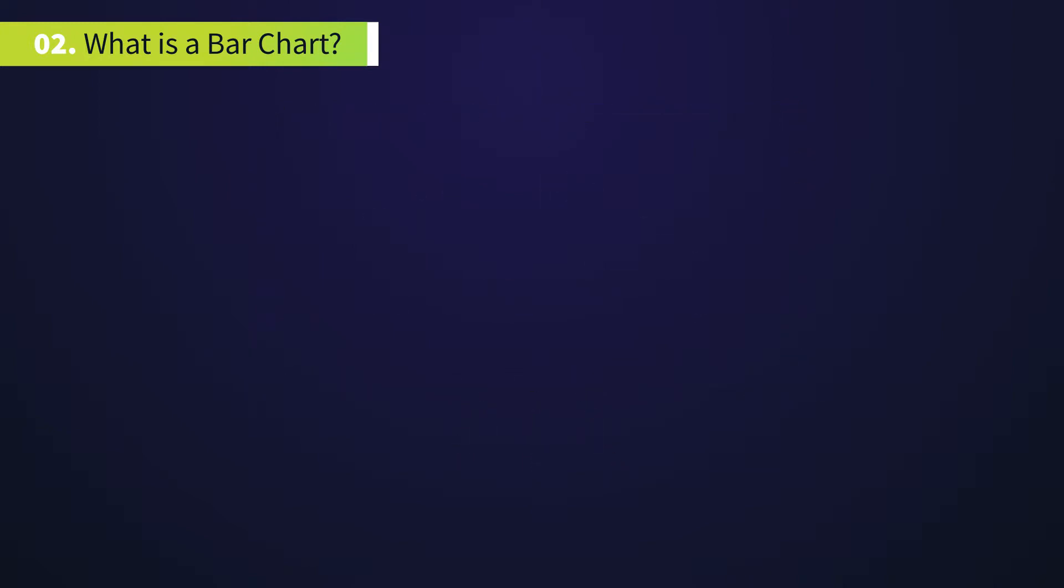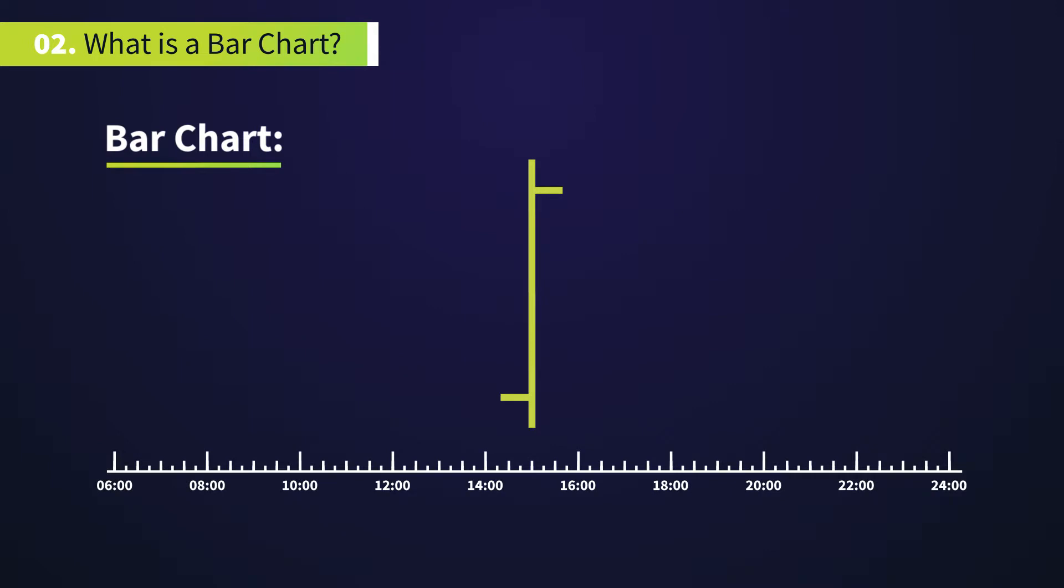This is a Western technique for price charting, comprised of a vertical line that represents the price range of a specific time period. The time period depends on your chart. The most popular periods are hourly, daily, weekly and monthly.